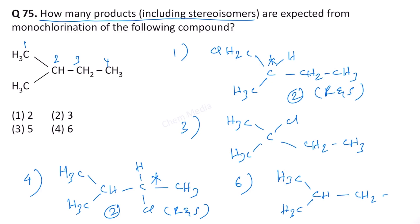So this means 6 isomers are possible therefore option 4 is correct.